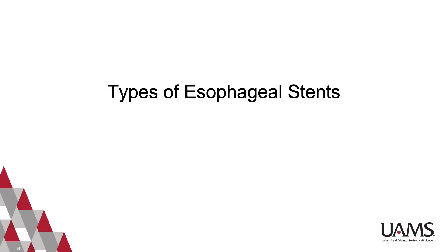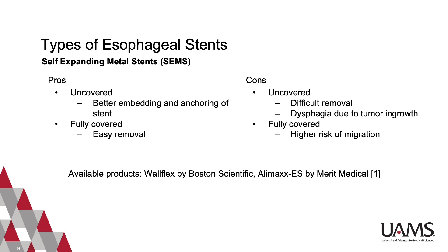We will now review the different types of stents, as well as some of the advantages and disadvantages of their use. We will begin with self-expanding metal stents, which are most often made of nitinol, an alloy of nickel and titanium. This material provides superelasticity and shape memory, expands at body temperature to fit the morphology of the lesion, and is also resistant to corrosion and hypoallergenic.